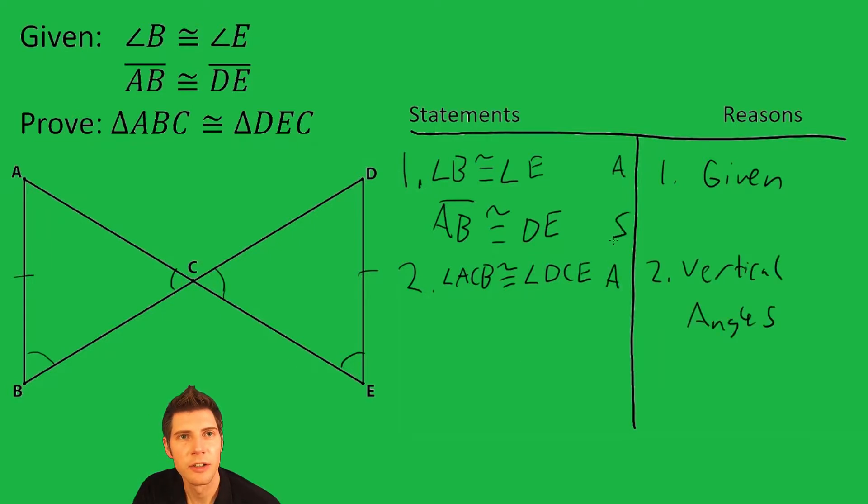So now we have an angle, an angle, and a side. So we can say the two triangles are congruent, and the reason for that was angle-angle-side.